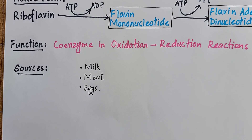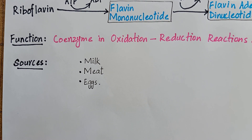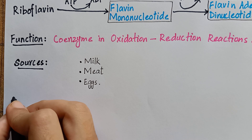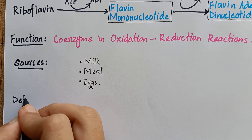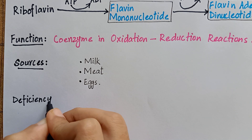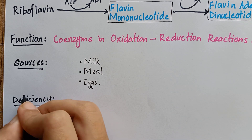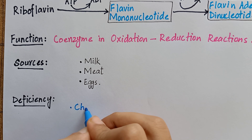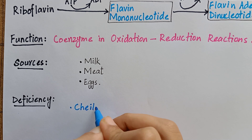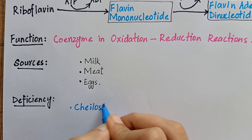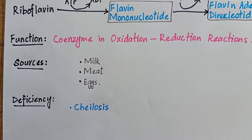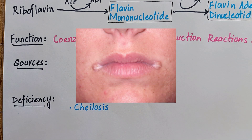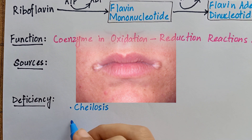Riboflavin deficiency is not associated with any major human disease. Its deficiency manifests as symptoms which include chylosis, that means fissuring at the corners of the mouth.